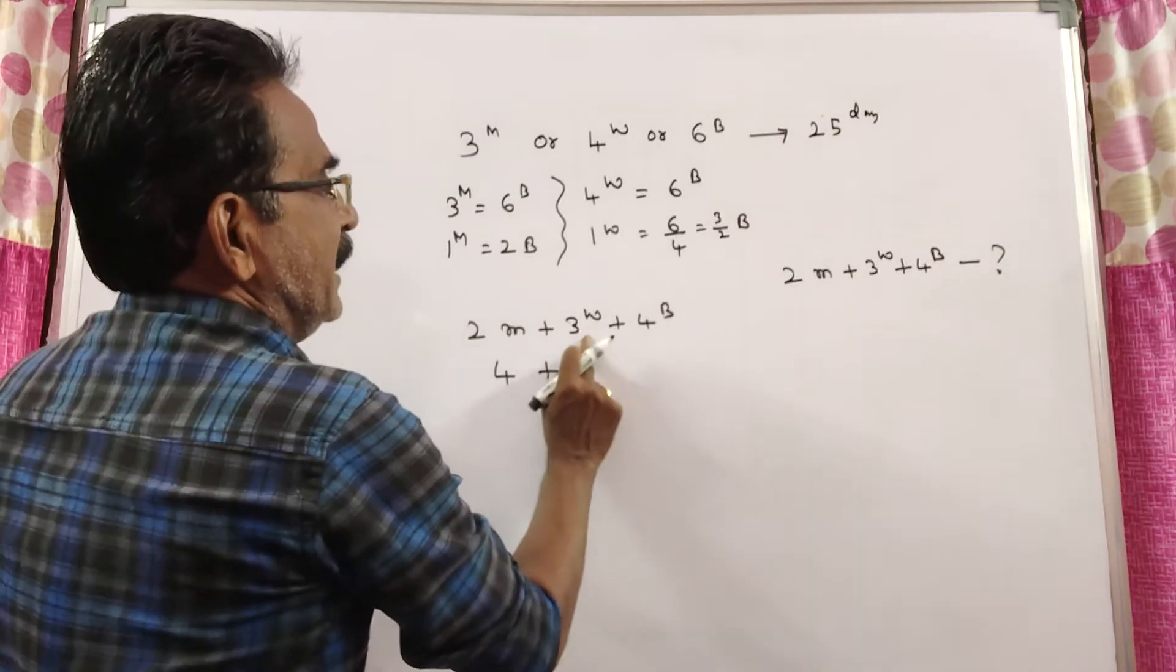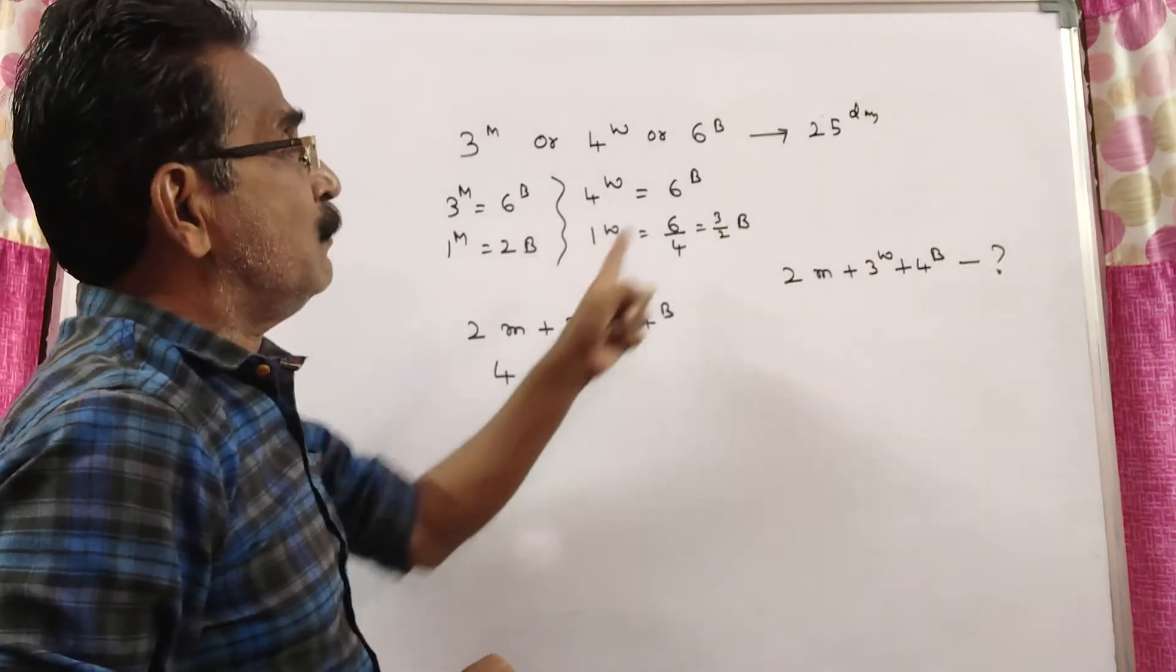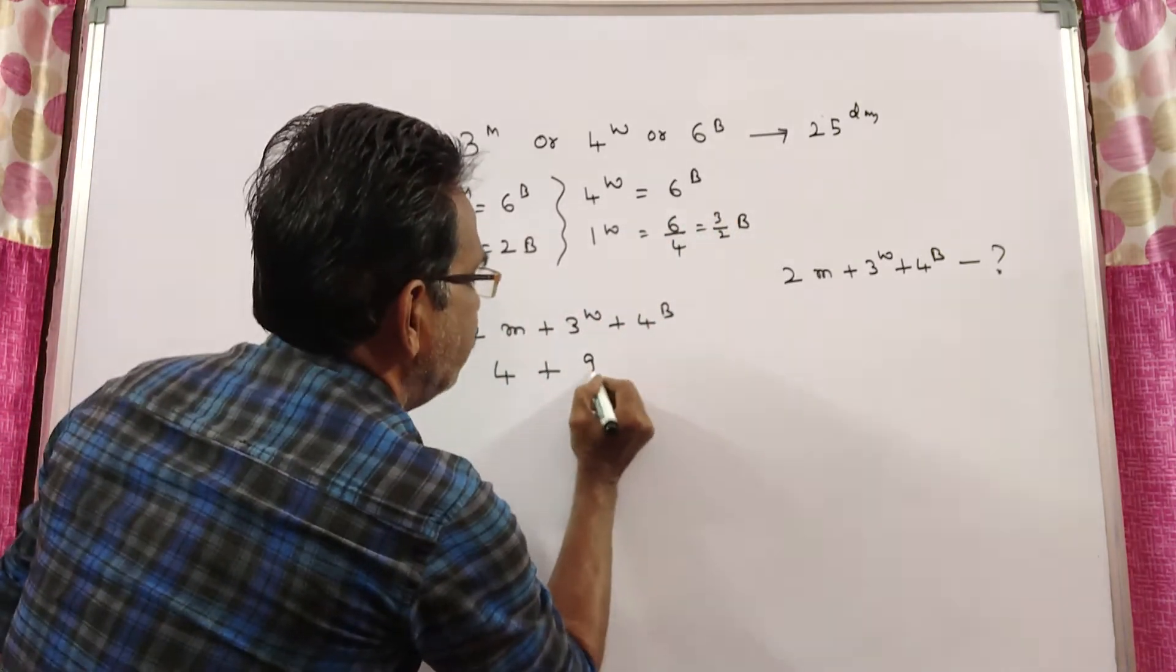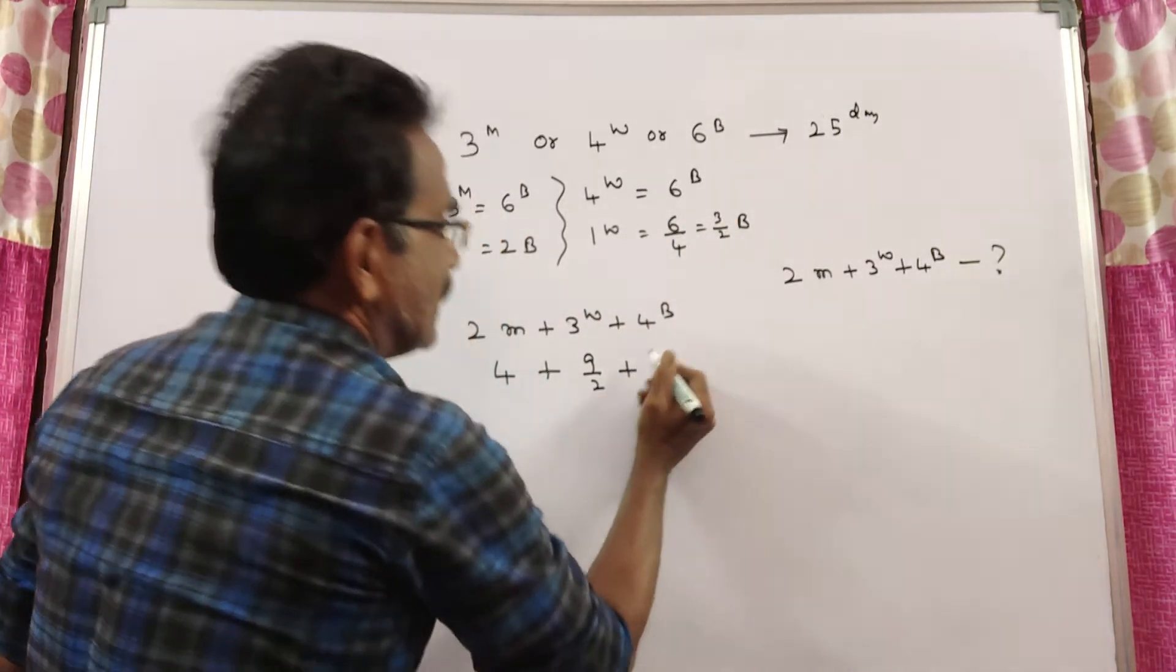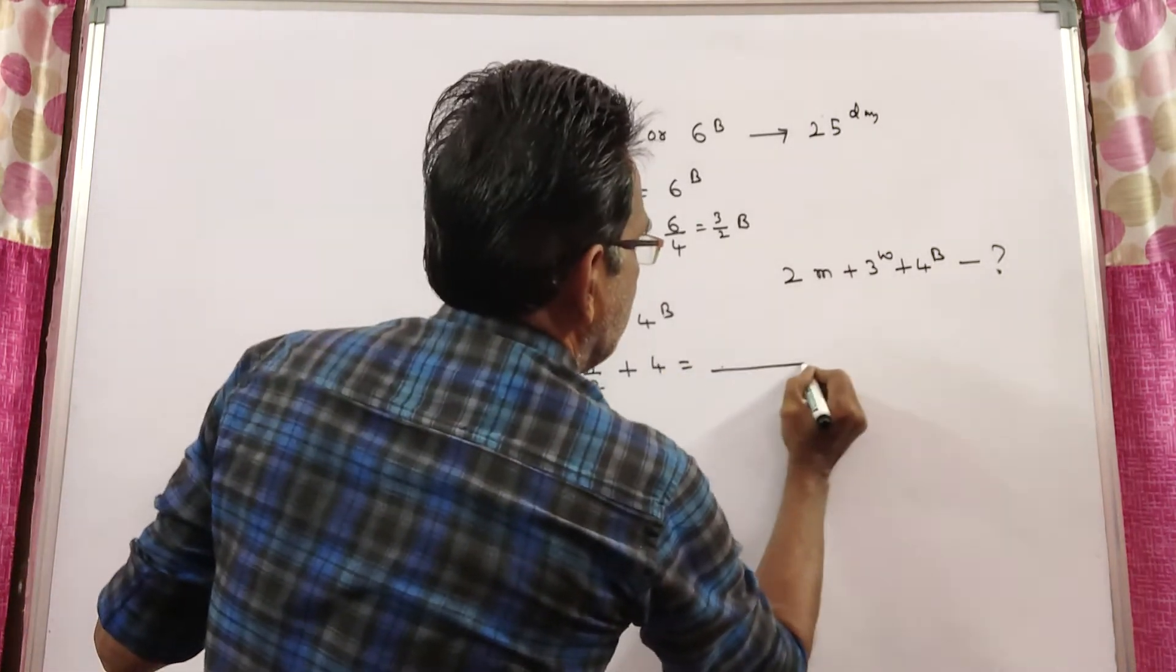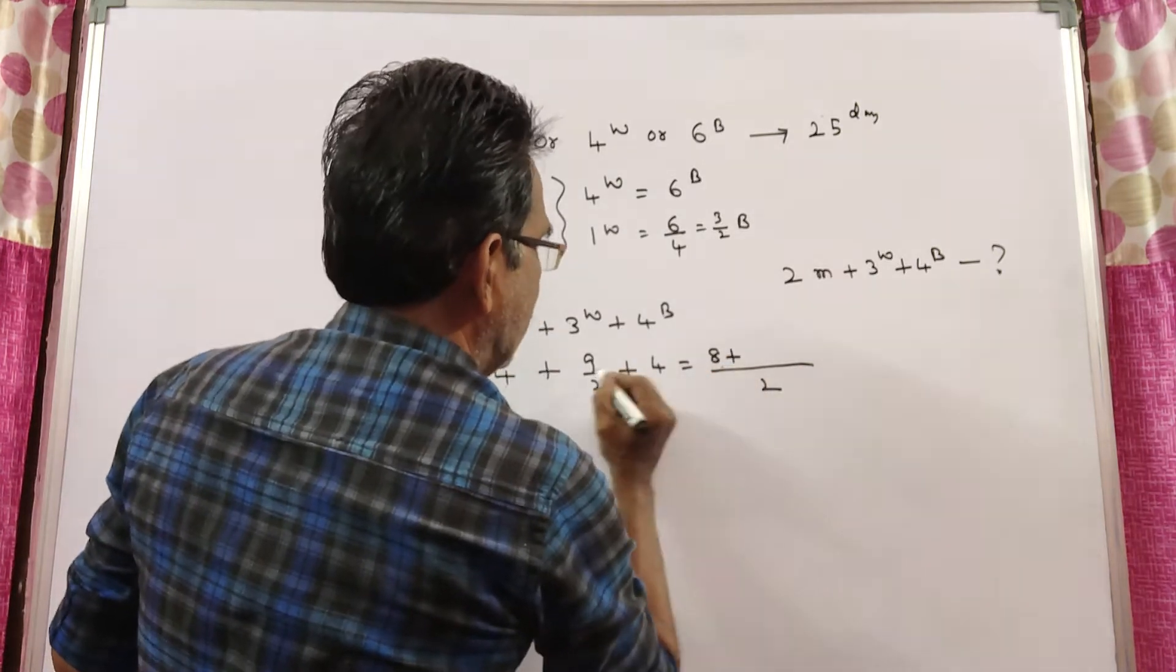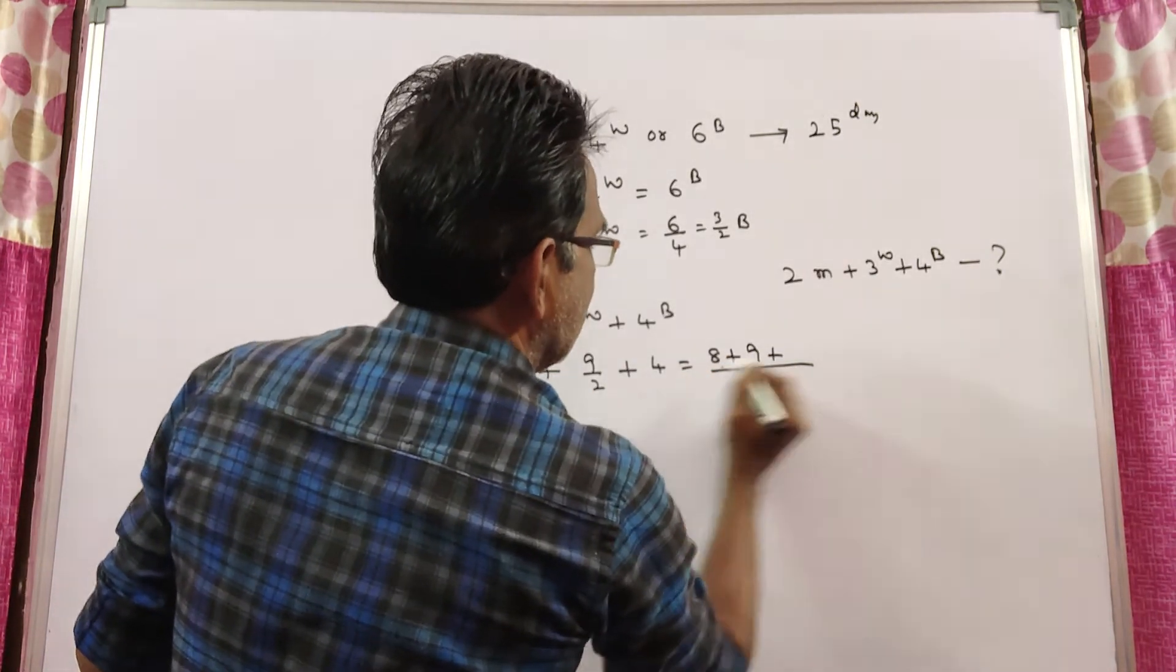Plus 3 women. 1 woman is equal to 3 by 2 boys. 3 women is equal to 3 into 3, 9 by 2 plus 4 boys. This is equal to LCM 2, 2 4's, 8 plus 9 plus 8.